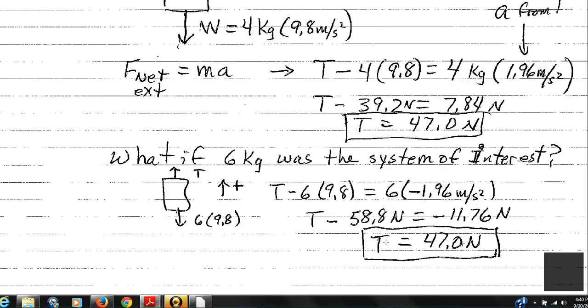Doing the calculations, I come up with 47 newtons. Is that a surprise? The tension of the string right above the six kilogram object is 47 newtons. The tension of the string right above the four kilogram object is 47 newtons.